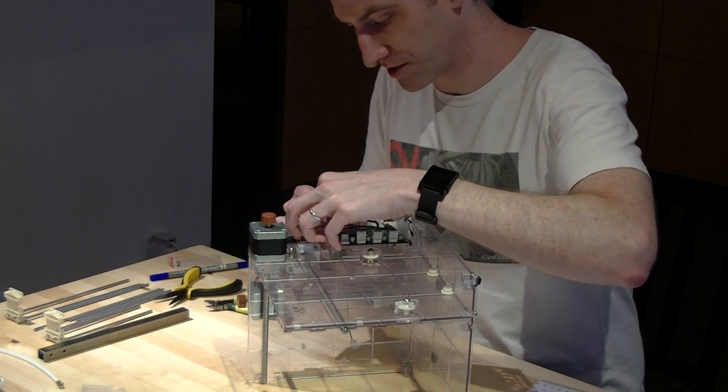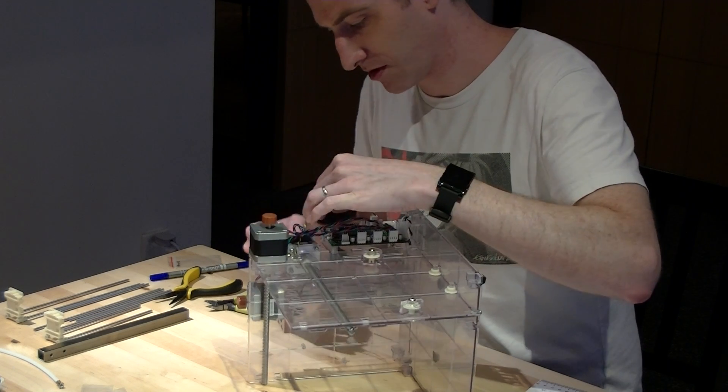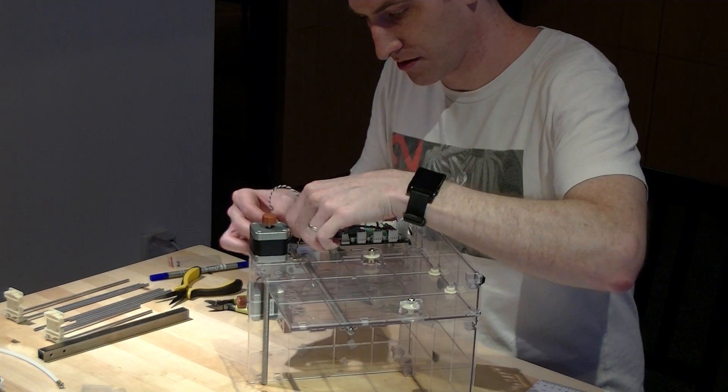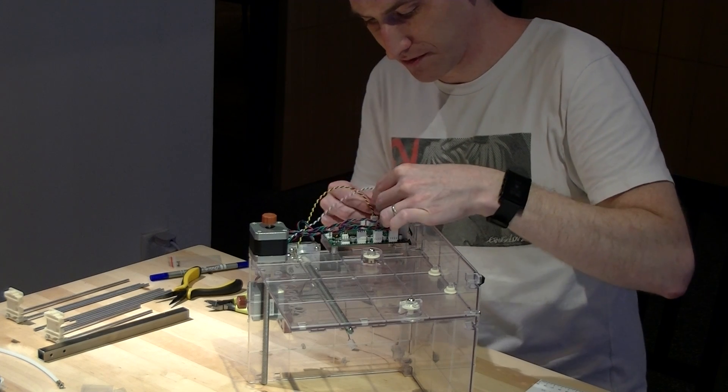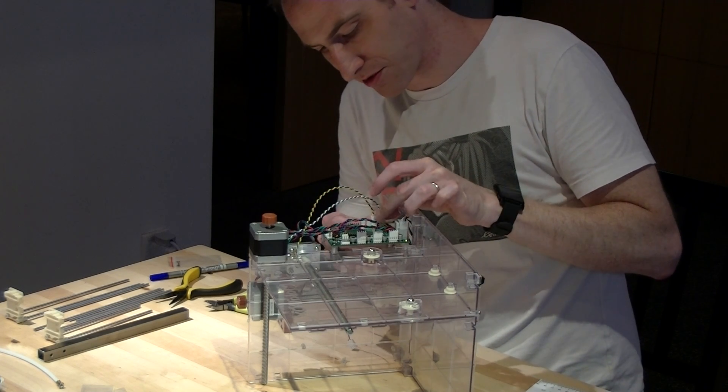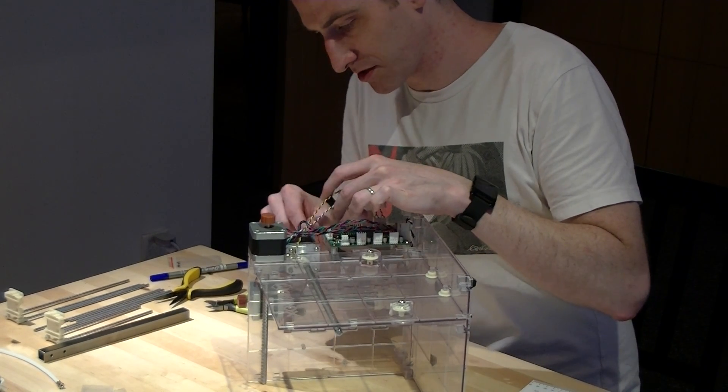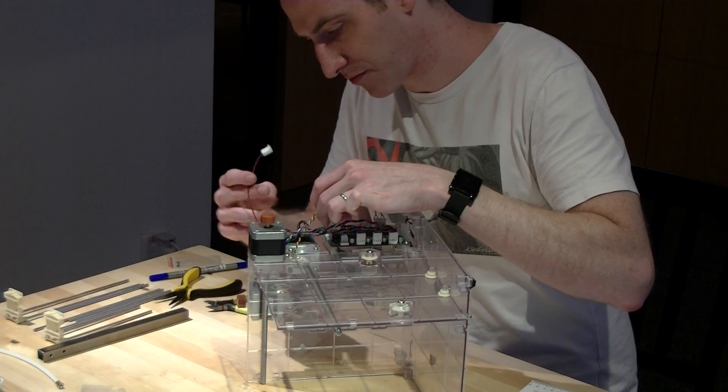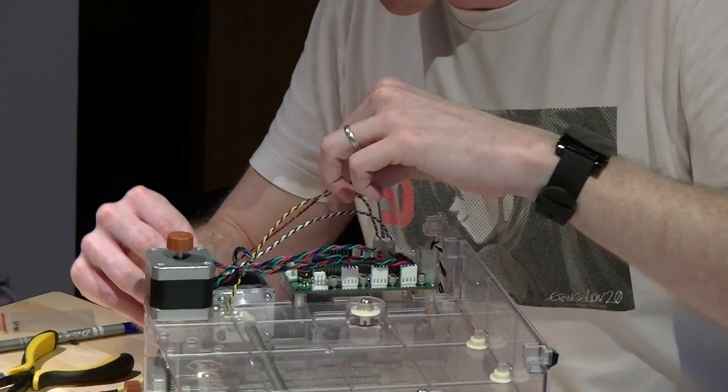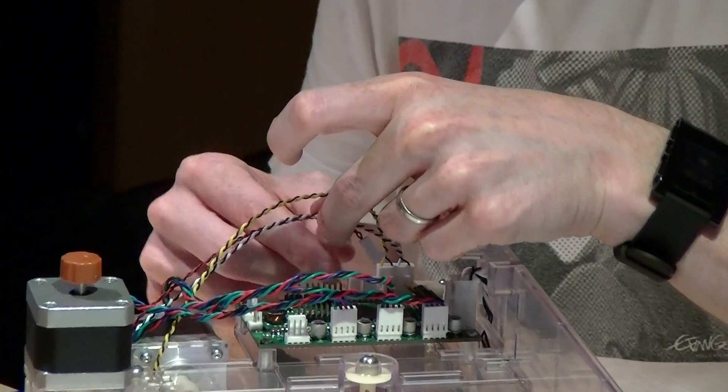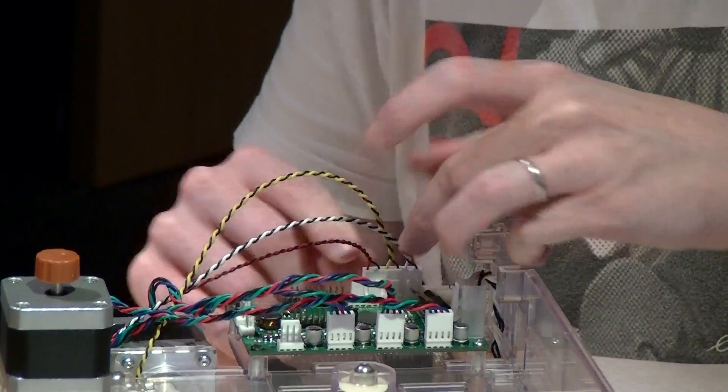The white wire is the X axis limit. And it goes in the first position right next to the USB connector.